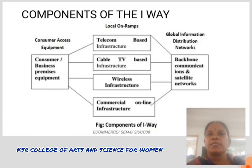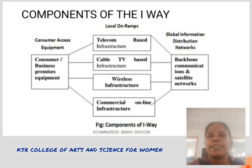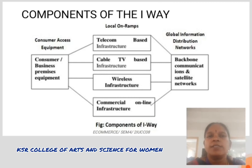Companies of the I-way: consumer access equipment like consumer business presence equipment, local on-ramps like telecom-based cable TVs, wireless infrastructure, commercial online infrastructure, global information distributing networks, backbone communication, and ICON or satellite networks.